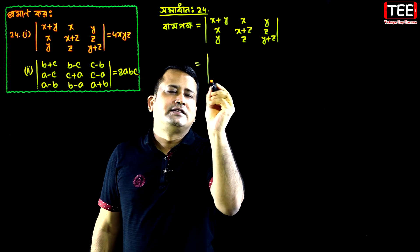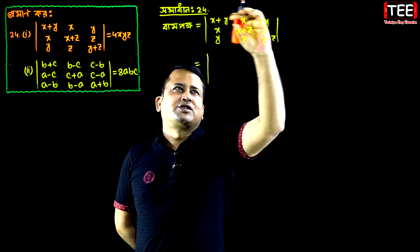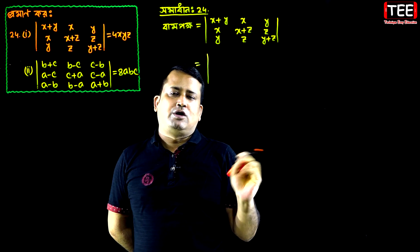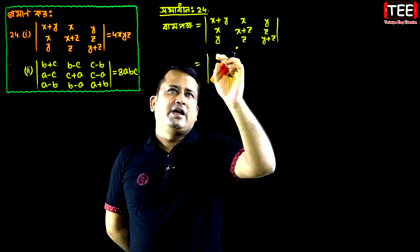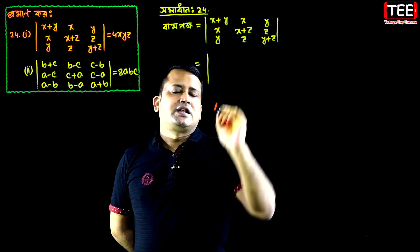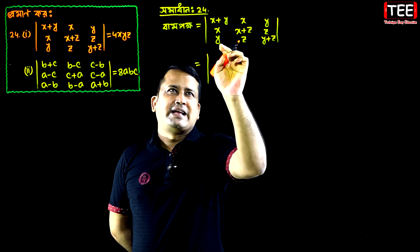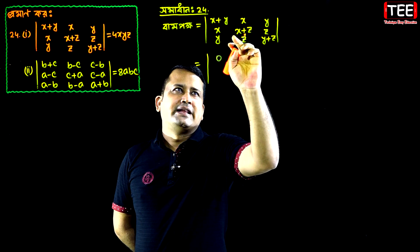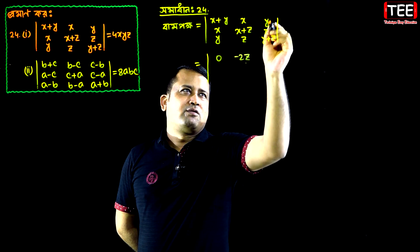Thank you so much for joining us. This is the first column we have to see. x plus y minus x minus y. This is where x minus x minus z minus z. What is minus 2z? y or y cut?